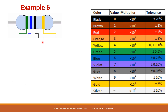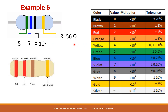Take the next example: green, blue, and black. Green is 5, blue is 6, and black means 10 power 0, which is 1, so the value is 56 ohms. Next, red-red-red-brown: red is 2, red is 2, and brown means multiply by 10, so the value is 220 ohms. These are some of the common resistors used in the lab.